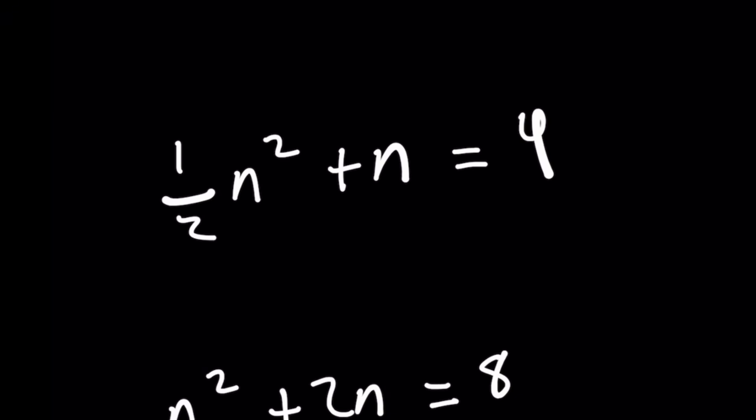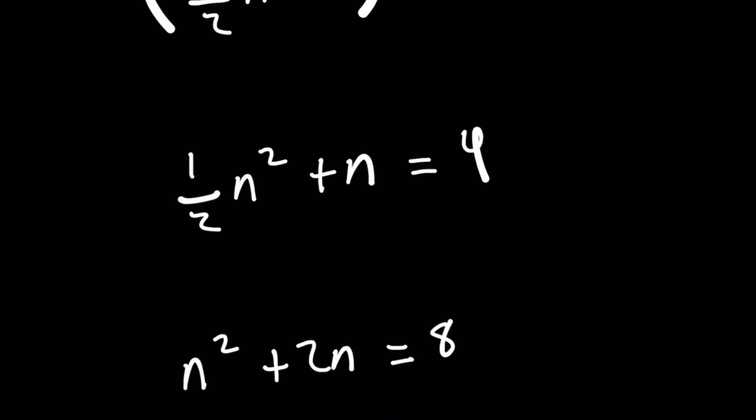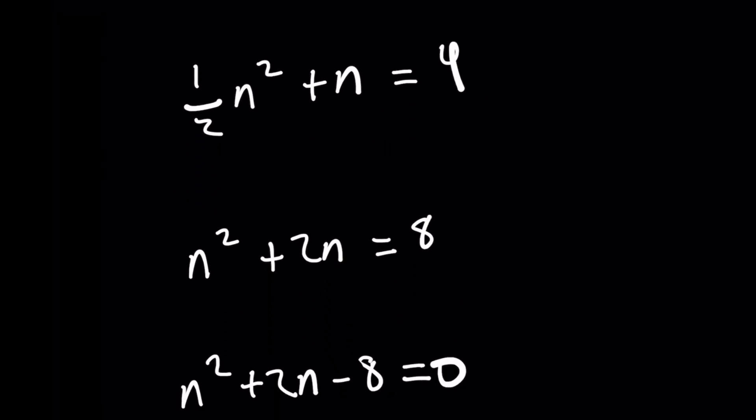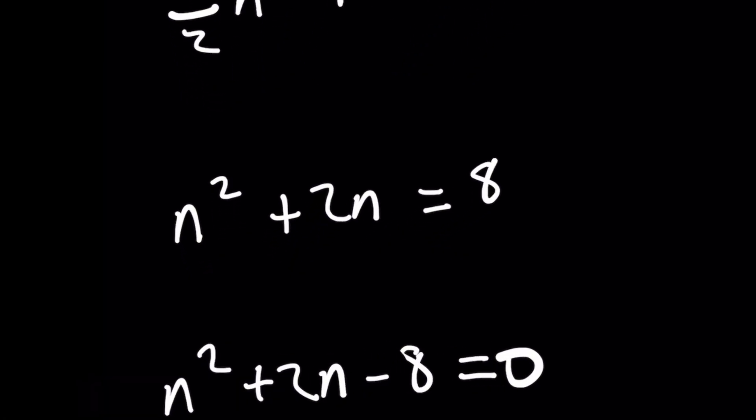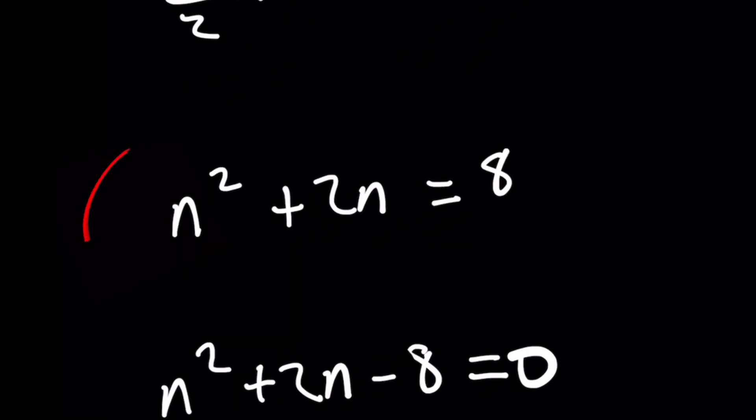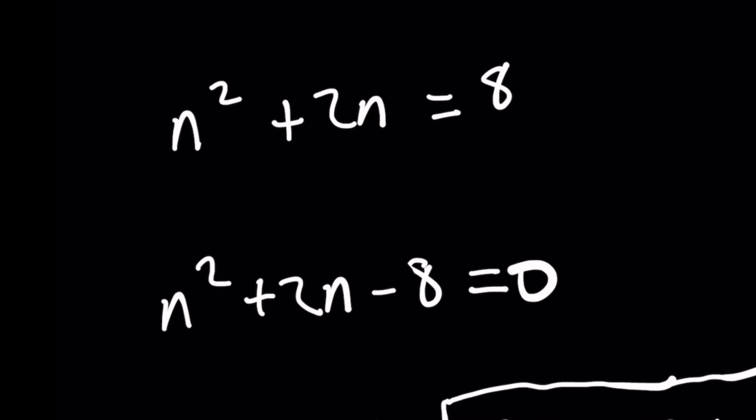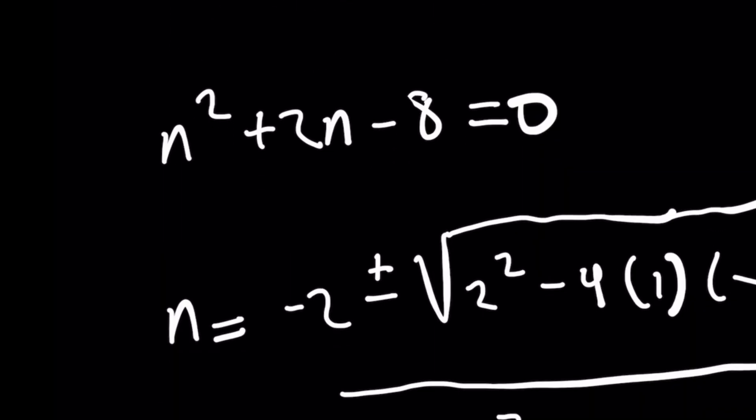And this is a very elementary algebraic expression. We can use a quadratic equation here because when we multiply both sides by 2 to get the coefficient of n squared having a 1 in front, you have n squared plus 2n equals 8. And when I subtract 8 on both sides, this is a very easy quadratic equation to work with.